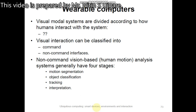Non-command vision based analysis systems generally have four stages. The first stage is motion segmentation, where the moving object is segmented. In the second stage, the object is classified. Then object classification is performed and the target object is tracked. Finally, the information from the target object captured, detected, or tracked is interpreted. These are the four vital stages in non-command based vision analysis.